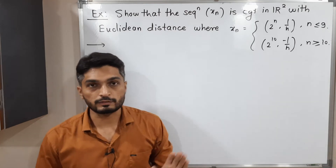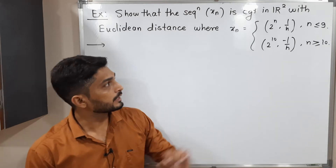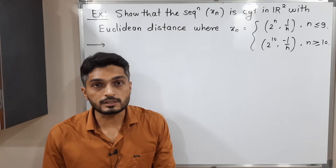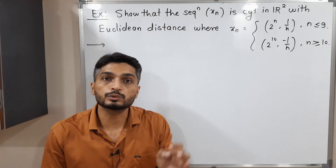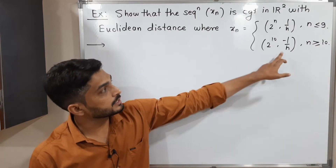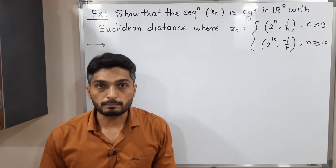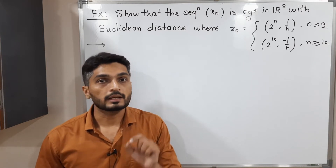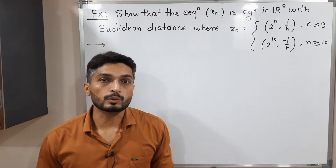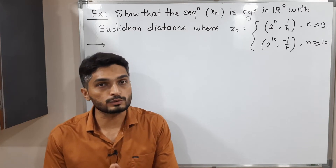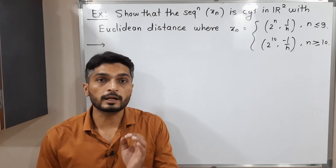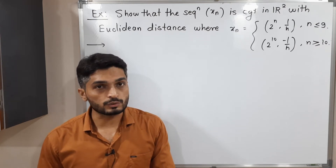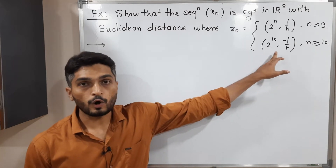So we will ignore the first definition since it is true for n less than or equal to 9, and focus only on the second definition, which is true for infinitely many n. The first component is 2 raised to 10, which is a constant sequence and obviously converges to 2 raised to 10. The second component is minus 1 by n, and applying the limit as n tends to infinity, its value will be 0. So the second component converges to 0.